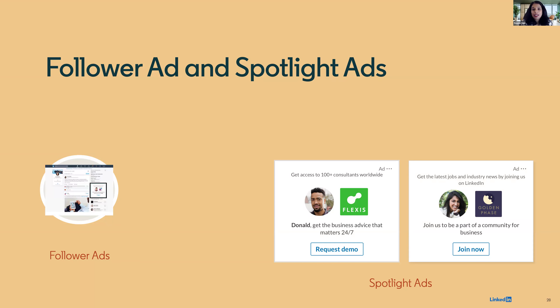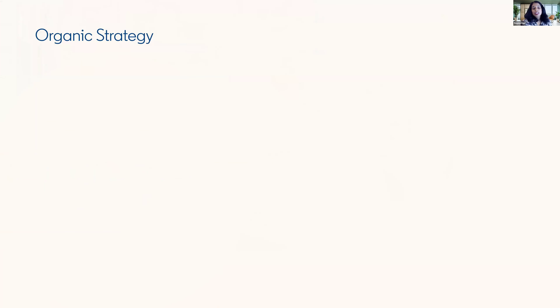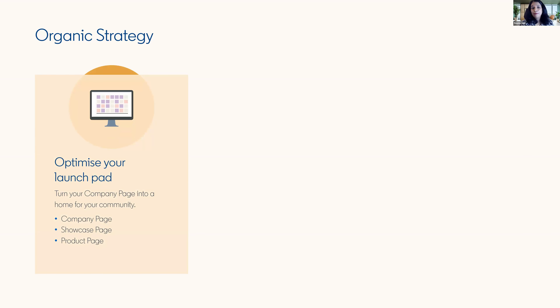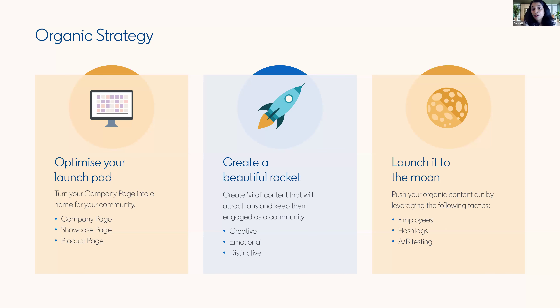We've built out the core pillars for creating ads on LinkedIn and thinking about objectives. Now we want to think about how you build compelling content. A good starting point is your organic strategy. On LinkedIn, you build out your company page first with organic — it's all about building and nurturing that professional community. Next, make the content really creative, emotional, and distinctive. Then think about more push tactics: using the employee voice, using hashtags, and A/B testing.